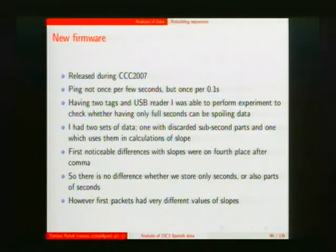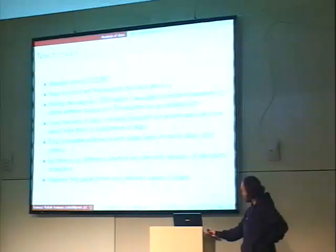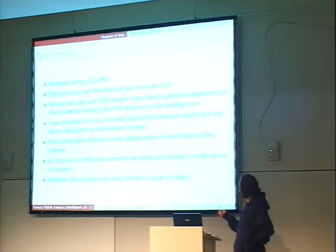Most of the work was done before Congress, before the camp. On the camp, Milos published new firmware and made a USB reader available, so I used this reader to check whether or not it is important that in the database I had only second resolution, not sub-second values of time. And only after the fourth or fifth decimal place were there differences in calculating slope, so it was even below my value of bucket size of histogram.